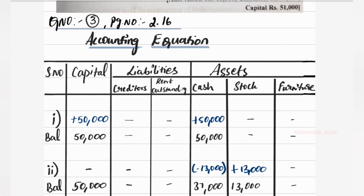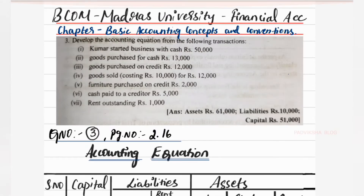Before writing the answer, we need to analyze what columns are affected by each transaction. Kumar started business with cash — so cash is affected and capital is affected. Next, goods purchased for cash — cash decreases and stock increases. Goods purchased on credit — stock increases and creditors appear. Goods sold — stock goes out and cash comes in.